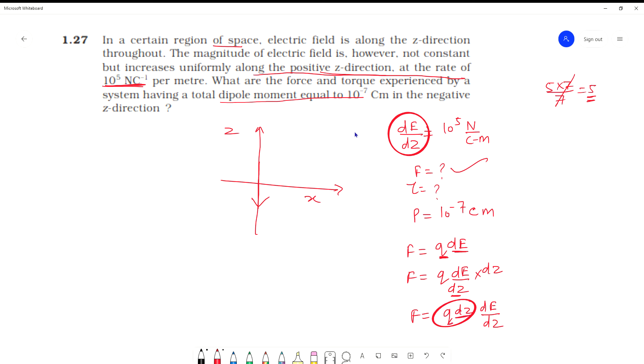The dipole moment formula is P equals q times d, where q is charge and d is distance between them.